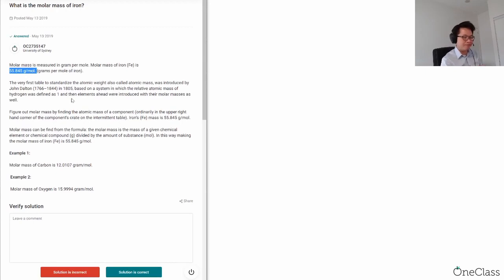You can use Google or you can look at your textbook from the periodic table. You can find the corresponding molar mass for iron or for different elements.